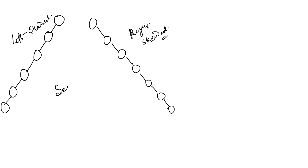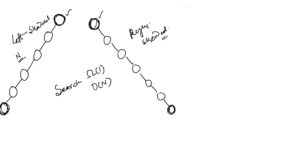For the search operation on a skewed tree, in the best case the search key is the root node, so the operation can be completed in constant time. But if we have to search for the rightmost node in a right-skewed tree, or the leftmost node in a left-skewed tree, and there are n nodes, then we require O(n) time for searching. We have to go from the root to every node, and finally find the data item at the leaf node — that requires O(n) time.